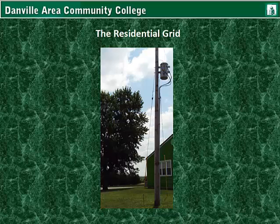Alright, let's start off with the residential grid. I've already talked about the basics of the grid, how it's distributed, how the energy is produced by hydroelectric plants, coal-fired plants, and we have an understanding that it goes to industries, usually three-phase AC, and then it splits off to single-phase lines. Now we'll talk about how it's run into the home.